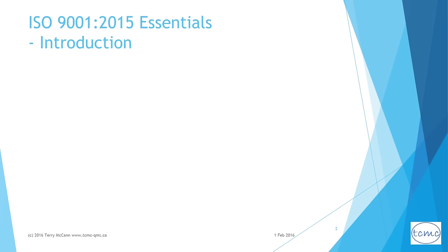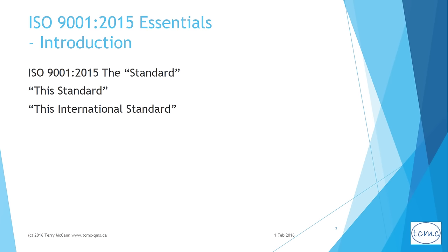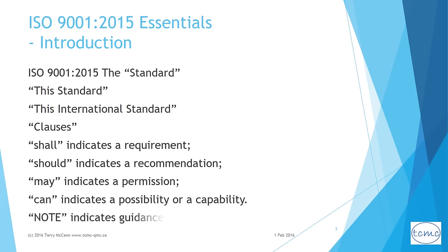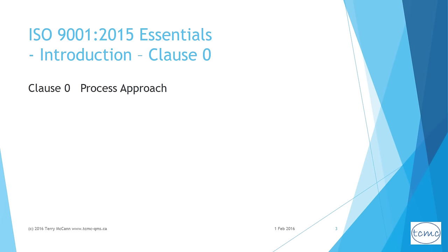ISO 9001 is often referred to simply as 'the standard,' which saves repeated references to ISO 9001:2015. The standard refers to itself as 'this standard' or 'this international standard.' Chapters or sections are referred to as clauses. The actual requirements only begin in clause 4. The following verbal forms are used: 'shall' indicates a requirement, 'should' indicates a recommendation, 'may' indicates a permission, and 'can' indicates a possibility or capability. Information marked as a note is for guidance in understanding or clarifying the associated requirement.